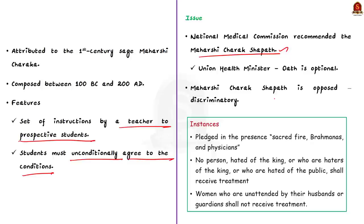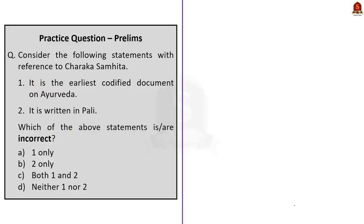There was opposition to this Shapat mainly because it is discriminatory. First, it highlights caste bias — the instructions state that it must be pledged in the presence of sacred fire, brahmanas and physicians. Second, it is discriminatory because a person who is hated by the king or hated by the public shall not receive treatment as per this oath. It also endorses gender bias — women unattended by their husbands or guardians shall not receive treatment. Because of these discriminatory natures, Maharishi Charaka Shapat has been opposed by many in the medical community.